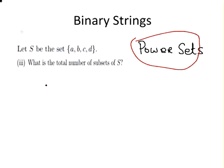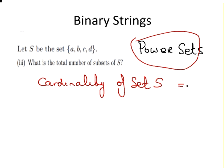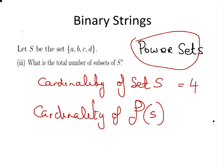The cardinality of set S is 4. So what is the total number of subsets of S? Well, what is the power set, what is the cardinality of the power set of S? Which we would write as P(S). That would be 2 to the power of 4, that would be 16. So there are 16 subsets of S.